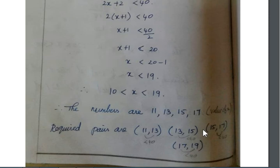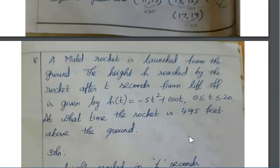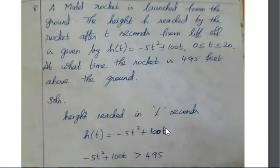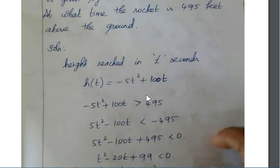Next, a model rocket is launched from the ground. The height h reached by the rocket after t seconds from liftoff is given by h(t) equals negative 5t squared plus 100t, for 0 less than or equal to t less than or equal to 20. At what time is the rocket 495 feet above the ground? This means h(t) must be greater than or equal to 495.